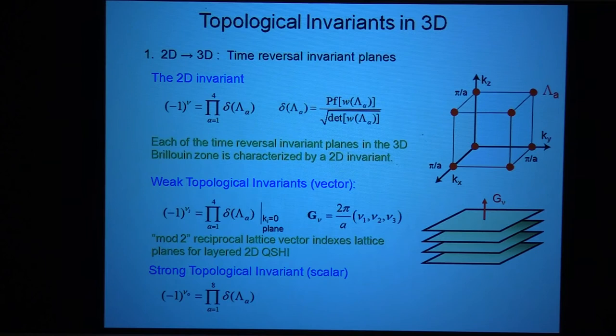Whereas the weak Z2, if you have a weak topological invariant, then you have something where this one and this one are the same. And that could happen if you just have a stacked system where it's independent of KZ.